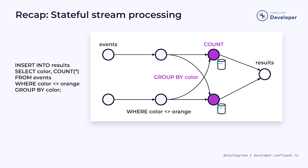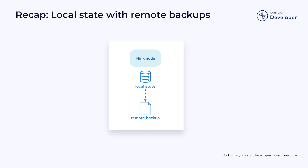We saw that some data processing operations, such as counting, need to keep some state. I described how Flink keeps this state local, both to make the state highly scalable and for good performance. This ensures that the state will survive the failure of any of the Flink processing nodes.